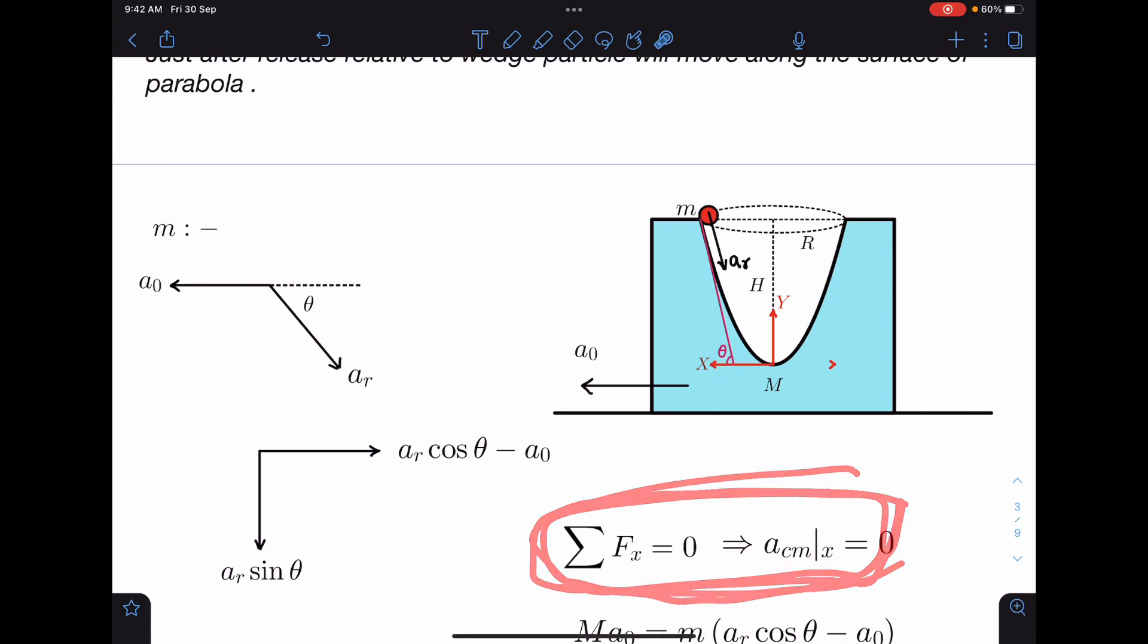I can say the net force in horizontal direction is zero. So center of mass will have zero acceleration in x direction. Center of mass will be at one point only, it will be at rest, it will not move in x direction.